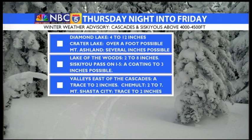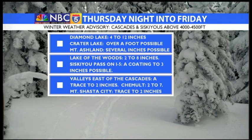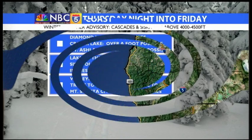Diamond Lake could receive four to 12 inches of snow. Crater Lake, over a foot will be possible. Mount Ashland, several inches to possibly even over a foot Thursday night into Friday. Lake of the Woods, two to eight inches of snow will be possible. Siskiyou Pass on I-5, a light coating to possibly two to three inches. Valleys east of the Cascades, a trace to two inches of snow Thursday night into Friday, and around Shemalt, two to seven inches. Mount Shasta City and around there, about a trace to possibly up to two inches of snow.